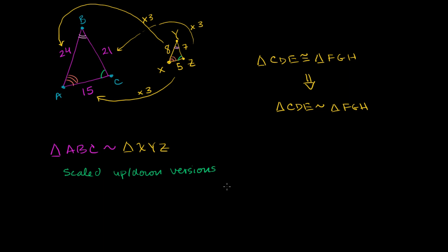Another way to think about similarity is that all of the corresponding angles will be equal. If something is similar, then all of the corresponding angles are going to be congruent.